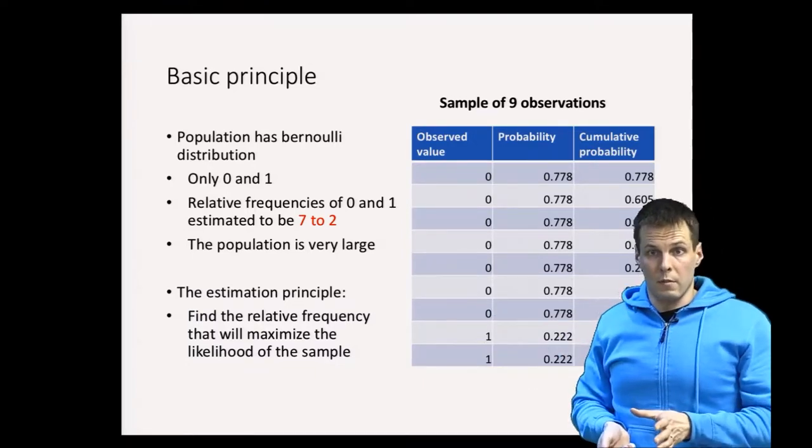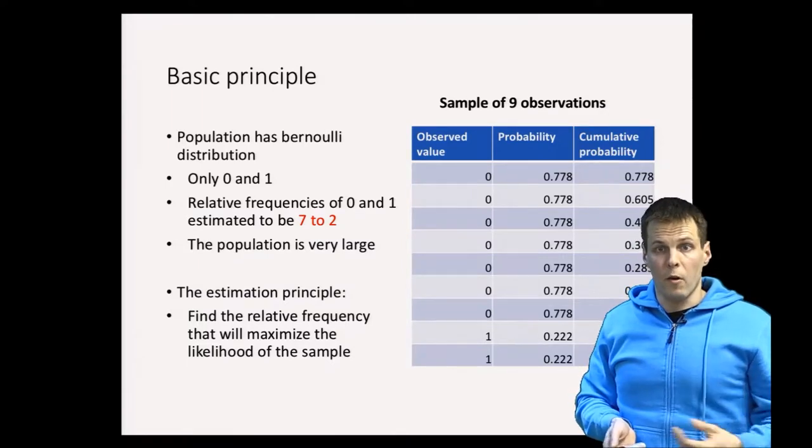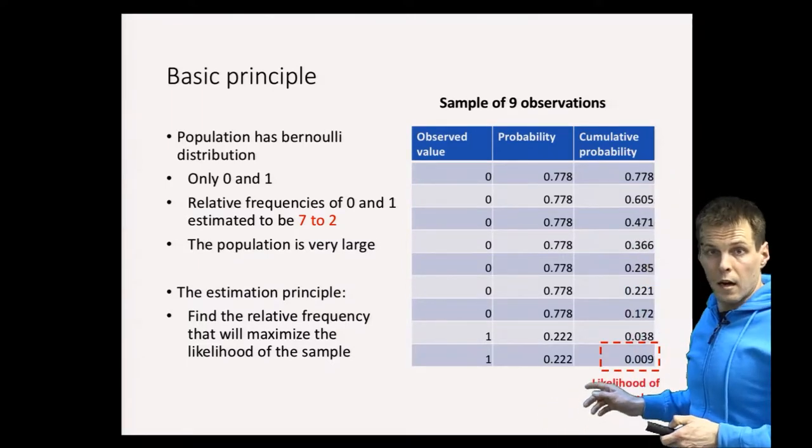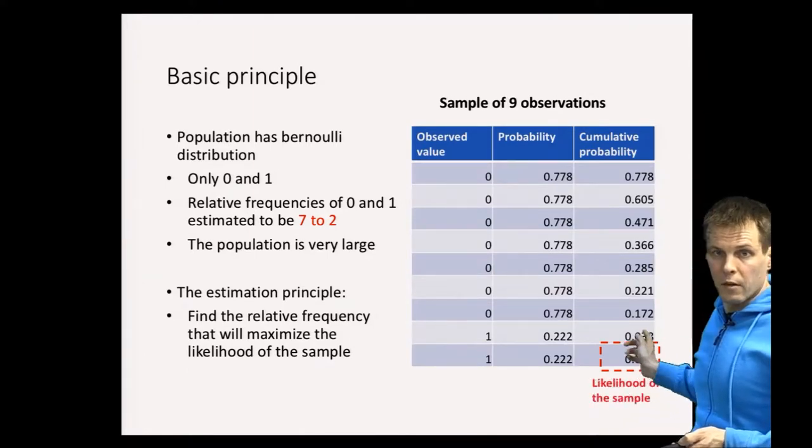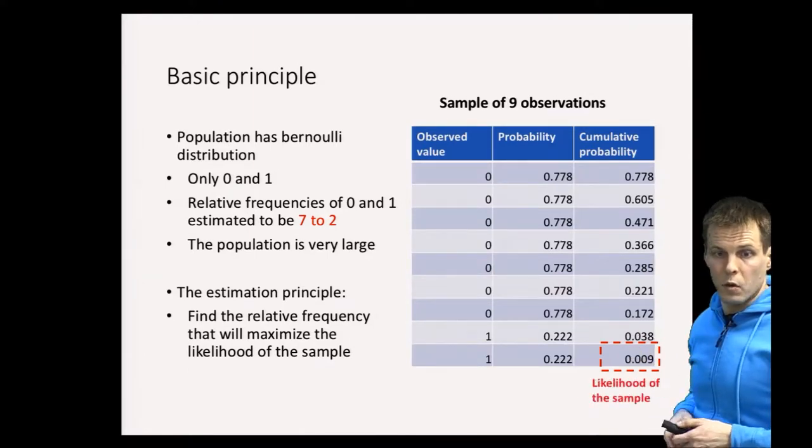The maximum likelihood estimate is simply found by changing our guess of the ratio of ones to zeros so that this value becomes as large as possible.